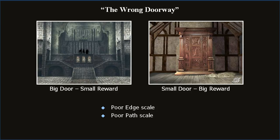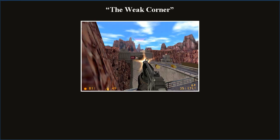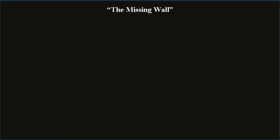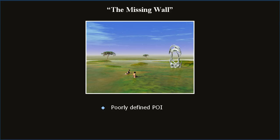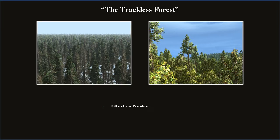To prevent this, watch out for poor edge scale and poor path scale. An incorrect scale can fail to foreshadow the scope and importance of the next area. A good rule of thumb: the distance traveled should never be smaller than the size of the destination's edge. The weak corner happens when you forget a corner is a vertical edge — those missing edges are great places to trigger events. When elements are revealed in a slow, gradual pace, it results in a lack of drama. The missing wall occurs when there are poorly defined points of interest — the player doesn't know what this place is, why they're there, or where to go.